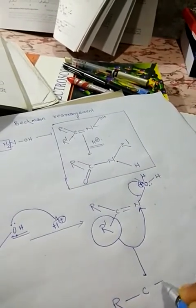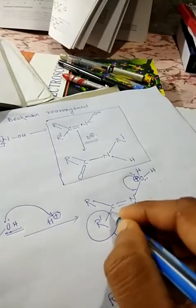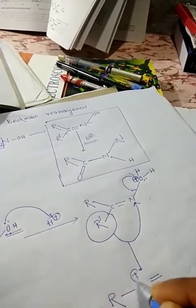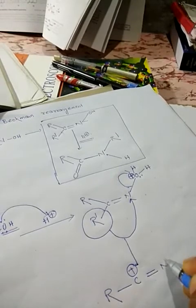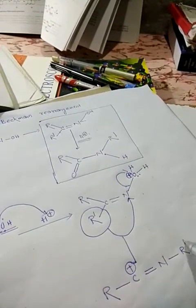Now we have R-C. Due to loss of this bond pair, carbon will acquire a positive charge. This is nitrogen. This is R'.